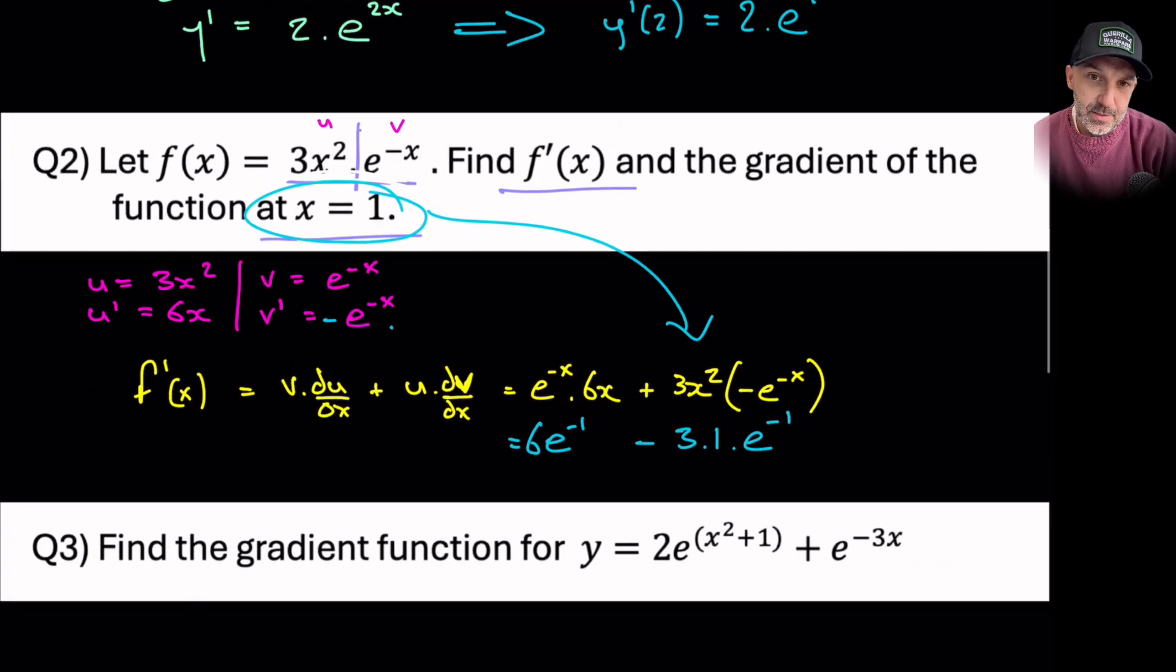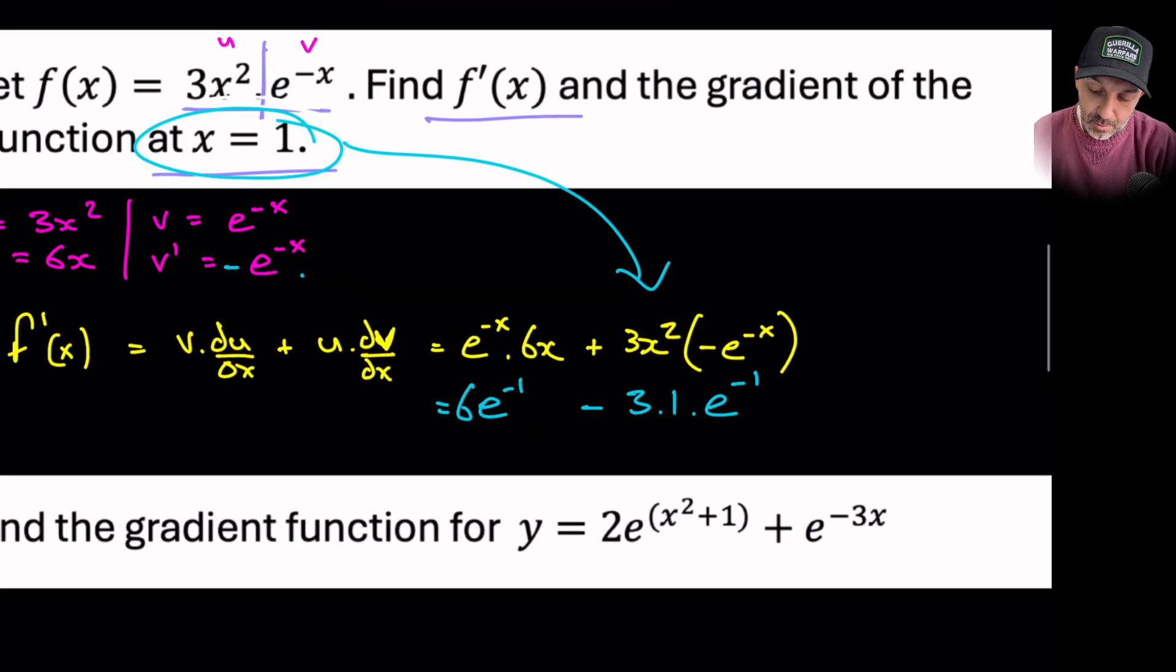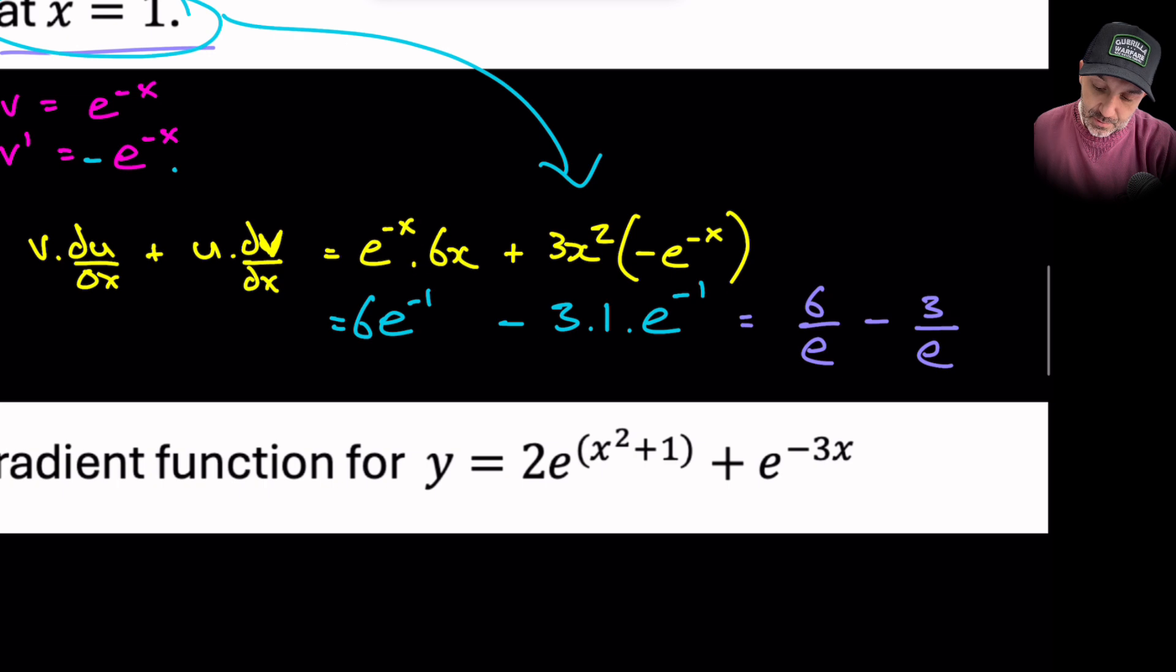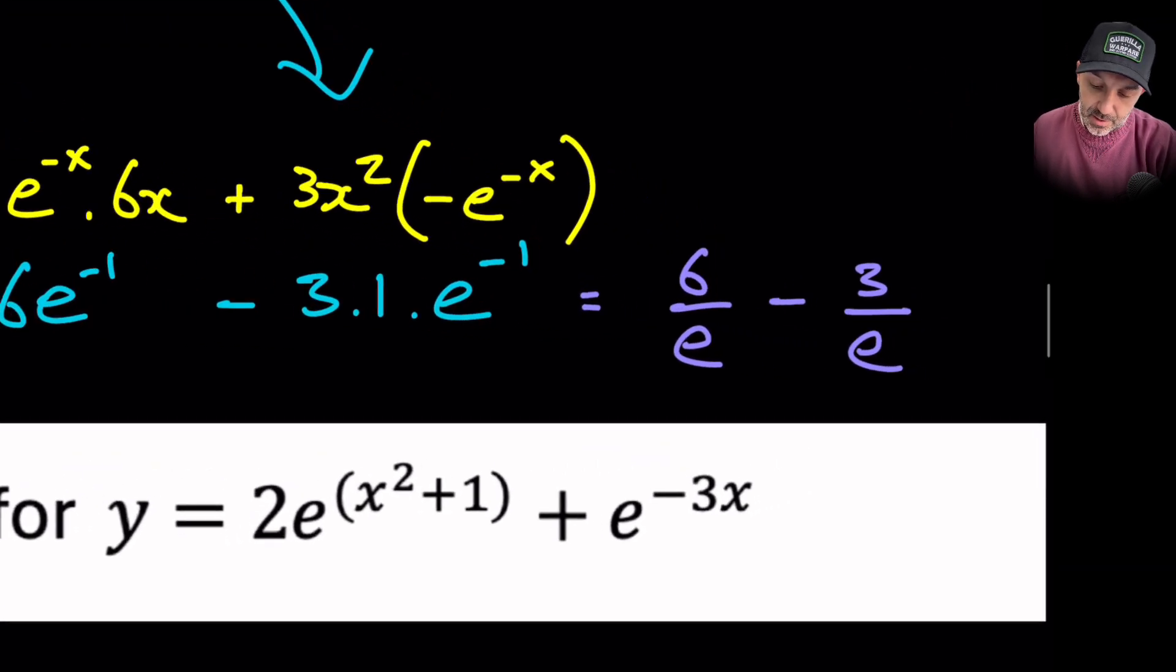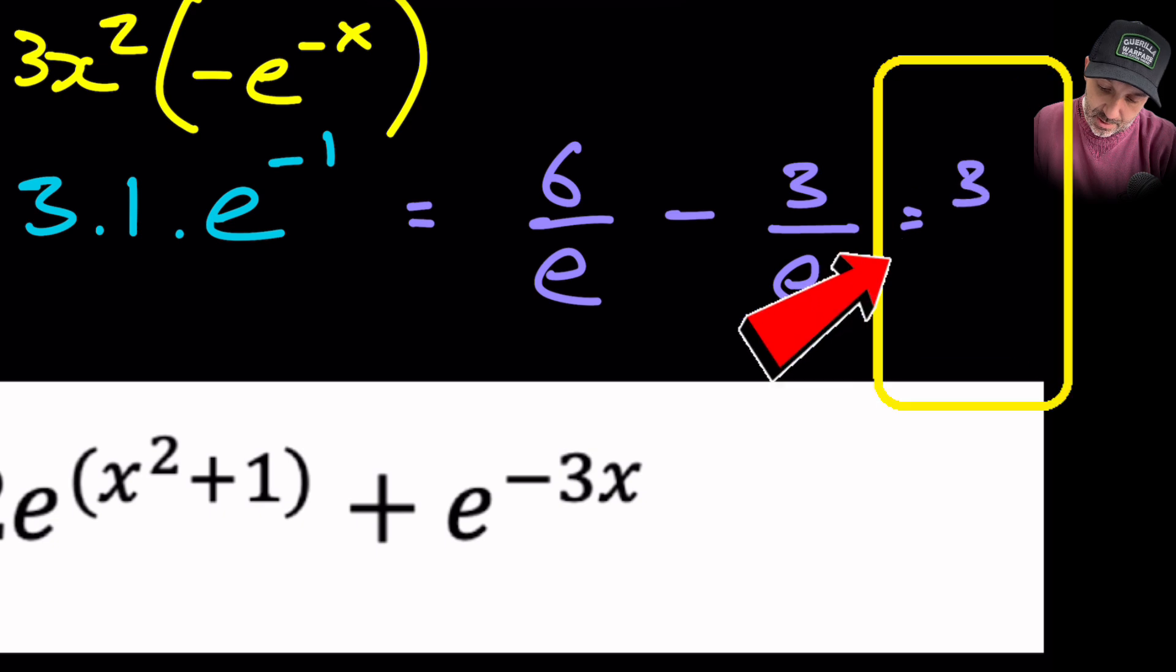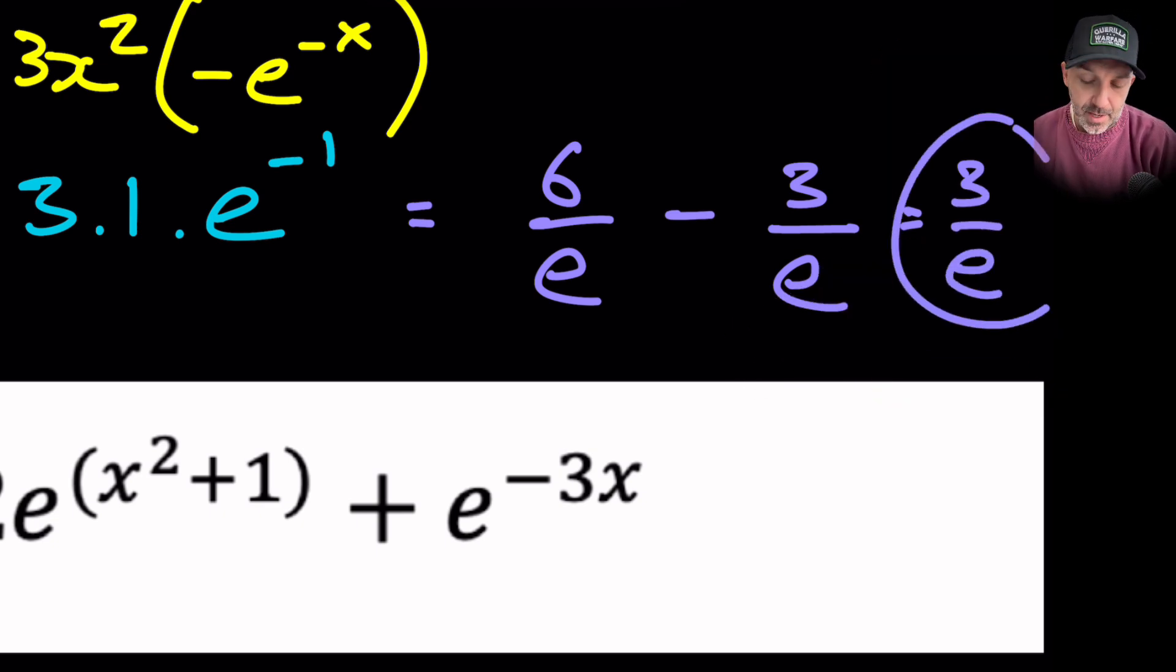Now that is really the answer. I would need a calculator if I want to give a decimal, but I'm just going to tidy it up for you. So this would be like saying 6/e minus 3/e. Therefore the denominators are the same, so 6/e minus 3/e would just mean that you end up with 3/e as a final answer there.